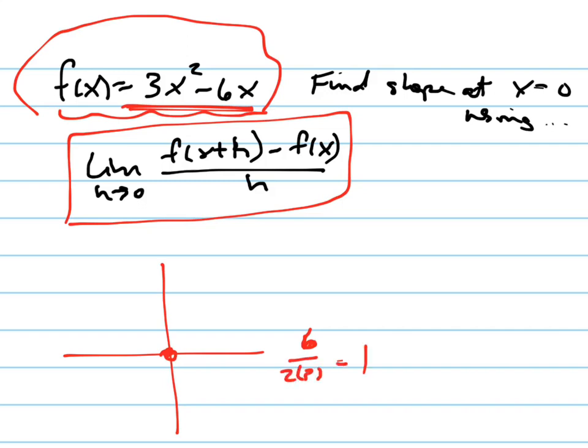So the vertex is at 1, negative 3. 1, negative 3, did I do that right? So there's my graph. It looks like that.